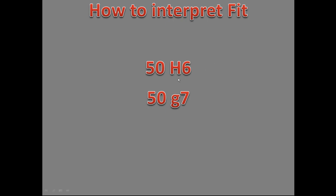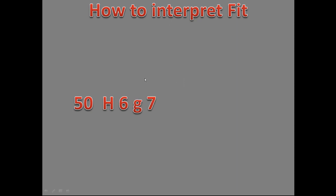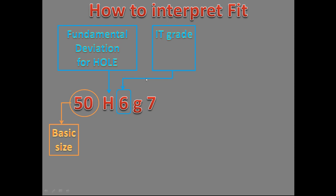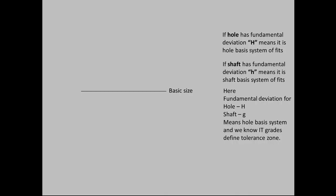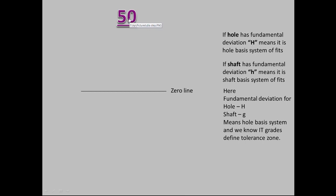A capital letter indicates the fundamental deviation for a hole, and a small letter indicates the fundamental deviation for a shaft. The digit followed by the fundamental deviation is the IT grade or tolerance grade. When we combine shaft and hole together, we get 50 H6 g7, where 50 is the basic size for both hole and shaft, capital H is the fundamental deviation for the hole, 6 is the IT grade for the hole, small g is the fundamental deviation for the shaft, and 7 is the IT grade for the shaft.